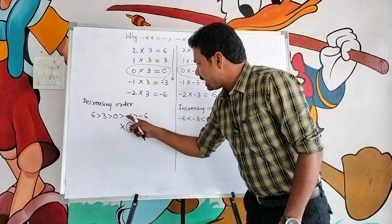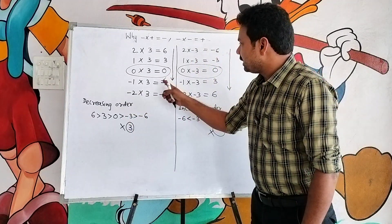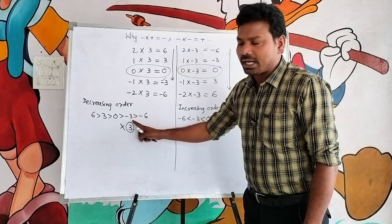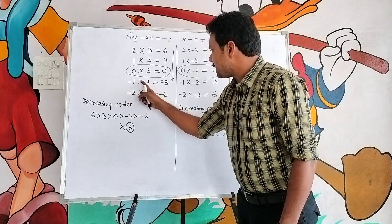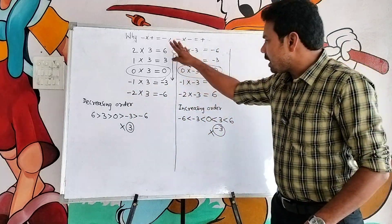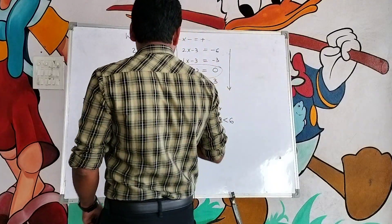This is in decreasing order. Here we are going to see the plus three. Therefore minus three is equal to minus, so minus into plus equals minus. Minus into plus equals minus, and this proves it.